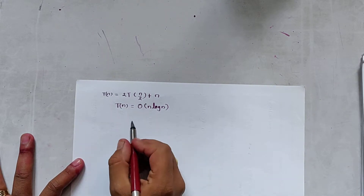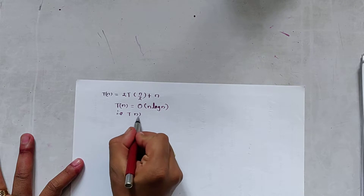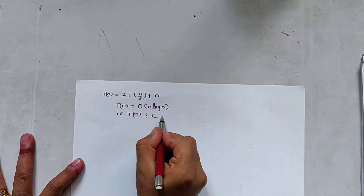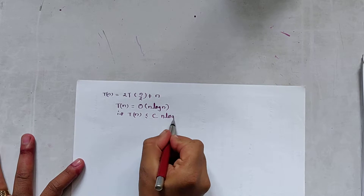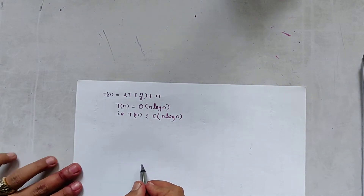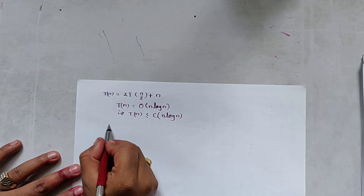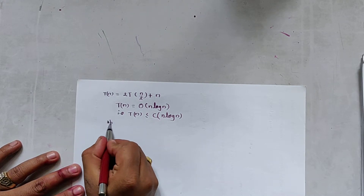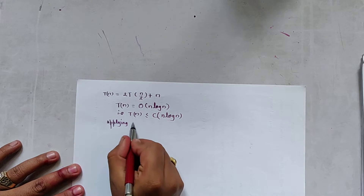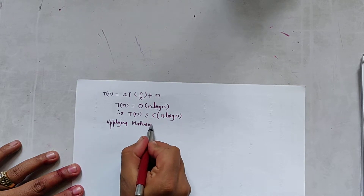So our hypothesis is T(n) ≤ cn log n, and we apply mathematical induction.